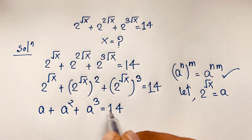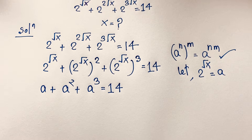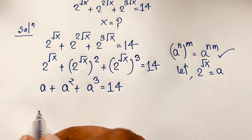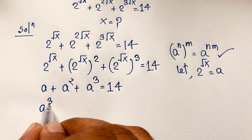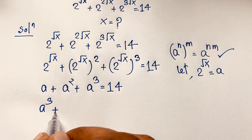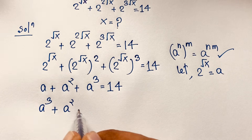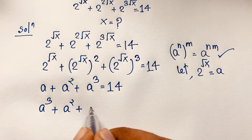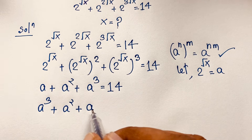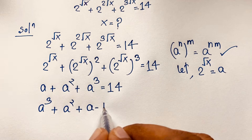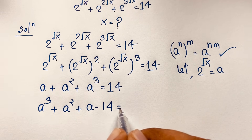So we find a nice cubic equation: a cubed plus a squared plus a, and moving 14 to this side gives minus 14, equal to 0. So our cubic equation is a³ + a² + a − 14 = 0.